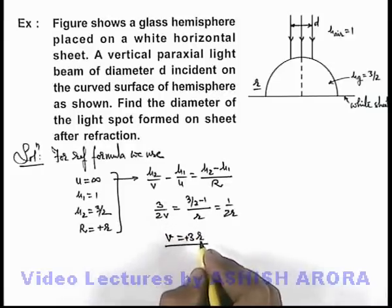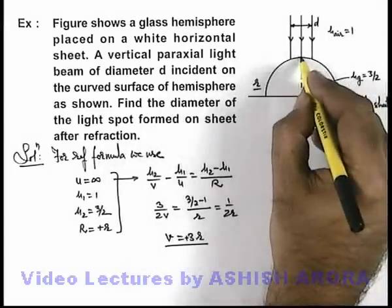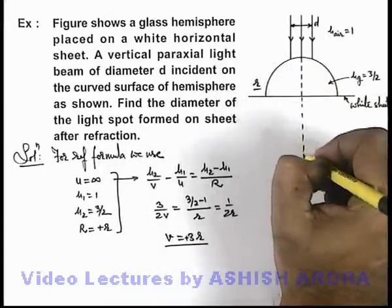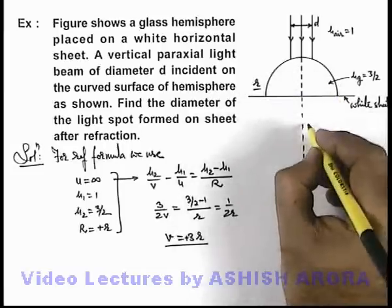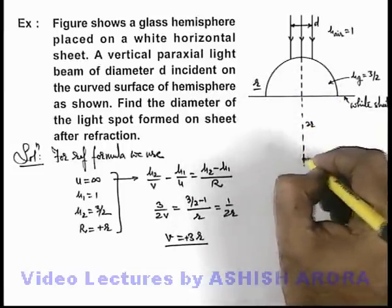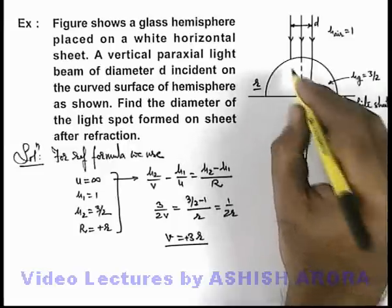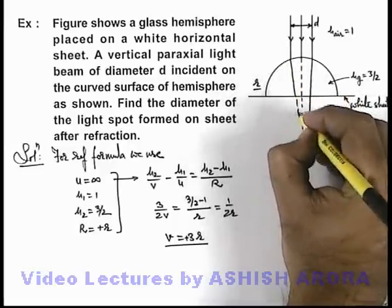That means the image will be produced at a distance 3R below the pole of the surface. This is R further below the base of the hemisphere, so at a distance 2R below the base. The incident light rays will be producing the image at this point.